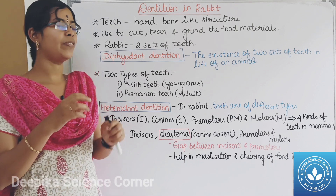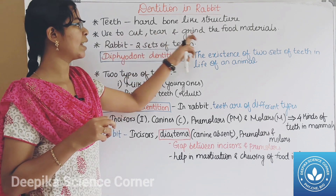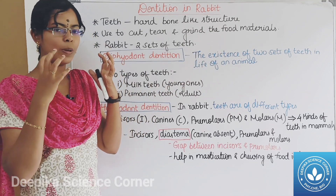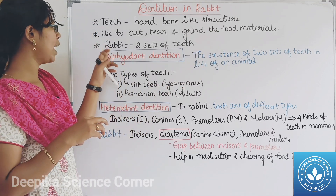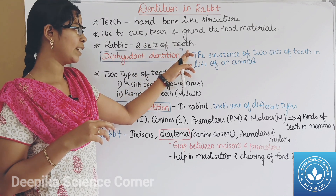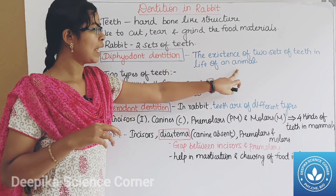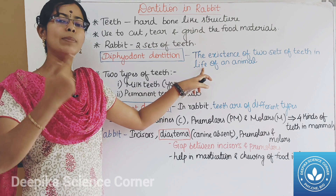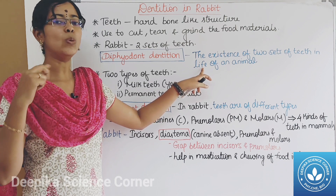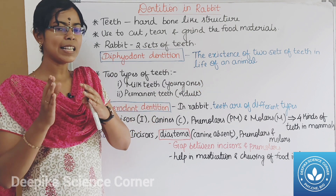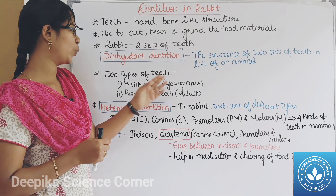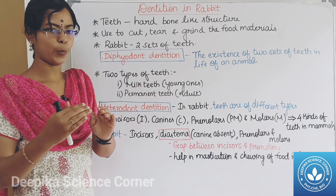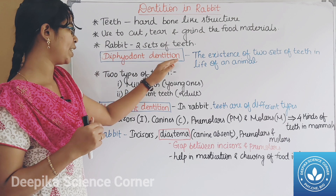The teeth function is to cut, tear, and grind the food materials. The rabbit has two sets of teeth throughout its life: one permanent teeth set and one milk teeth set. Milk teeth are the same as in other mammals. Permanent teeth are present in adults.